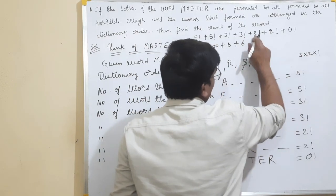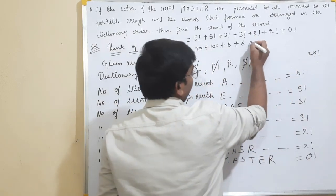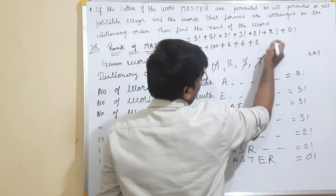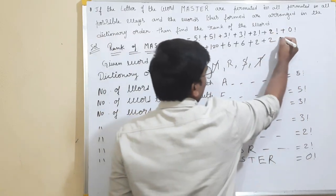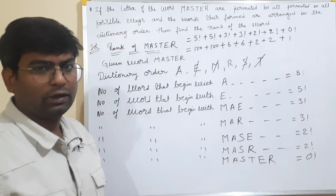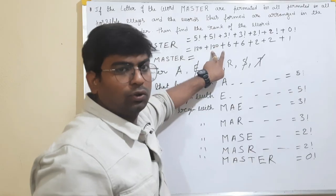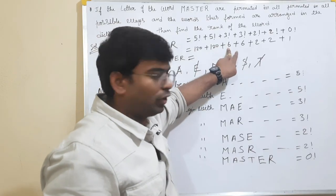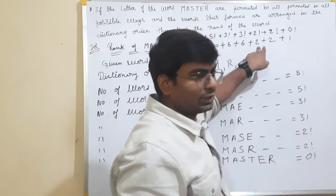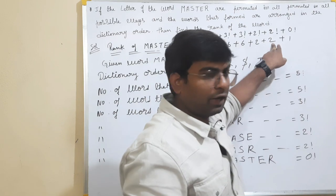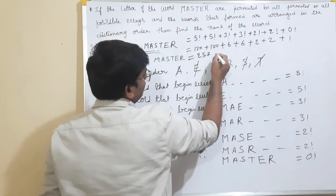Our 2 factorial: 2×1 = 2. Plus 2 factorial: 2×1 = 2. 0 factorial = 1. So if you look at the sum: 1×120 = 120. 240. 246. 252. 254. 255, 6, 7. So 257 is the answer.